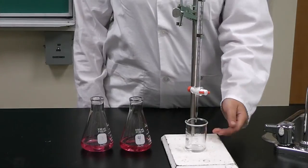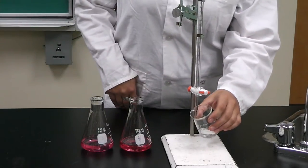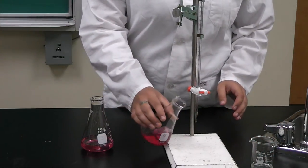When you are ready to begin your titration, simply remove the waste beaker underneath the burette, and place your Erlenmeyer flask with your prepared solution underneath the burette.